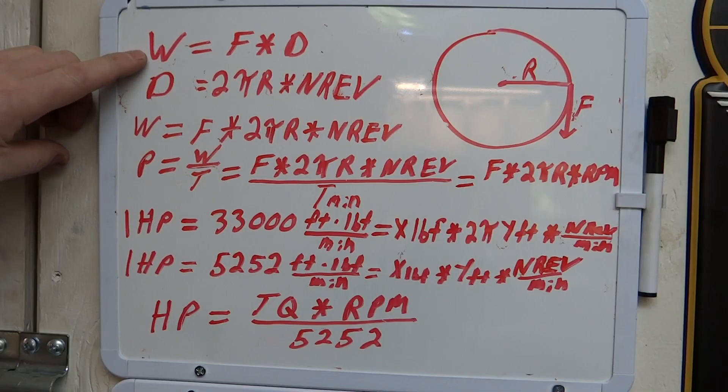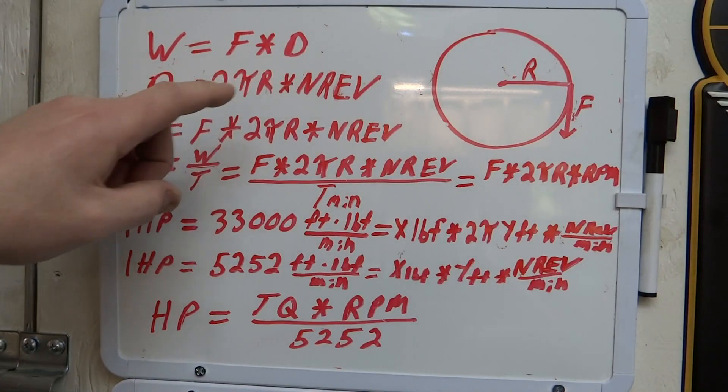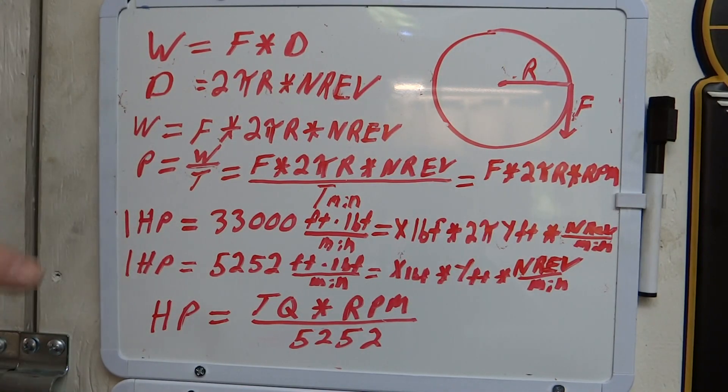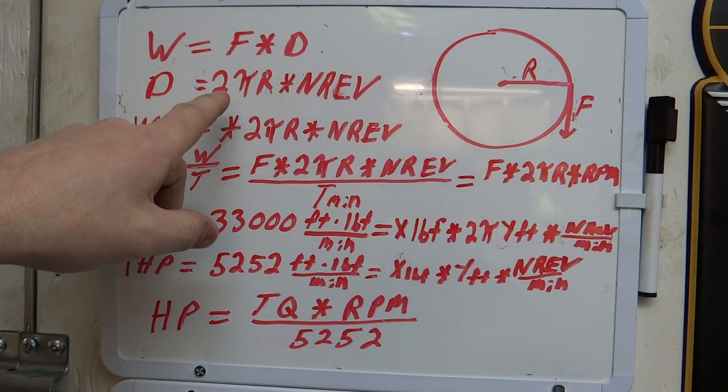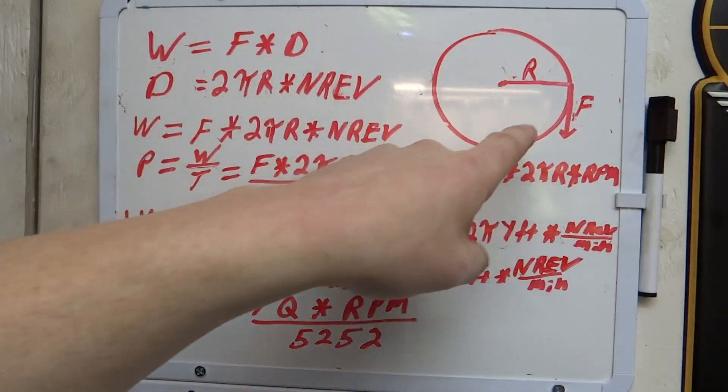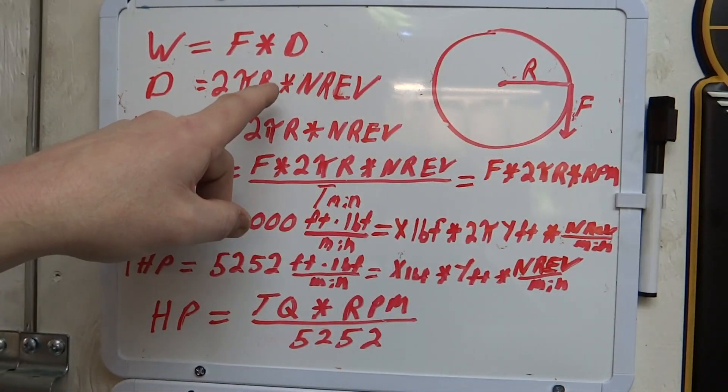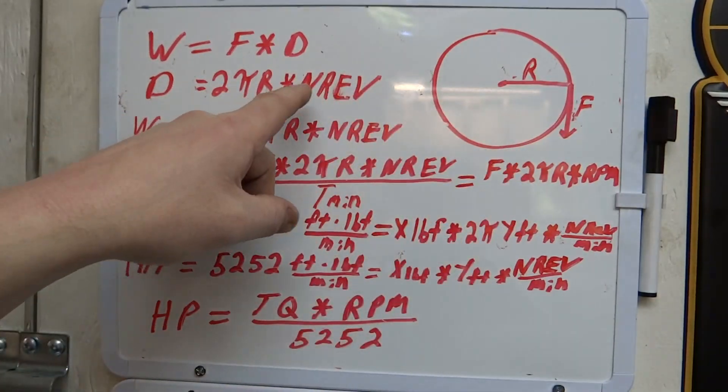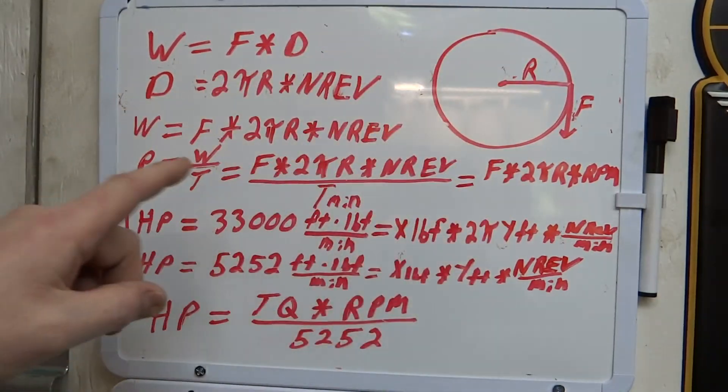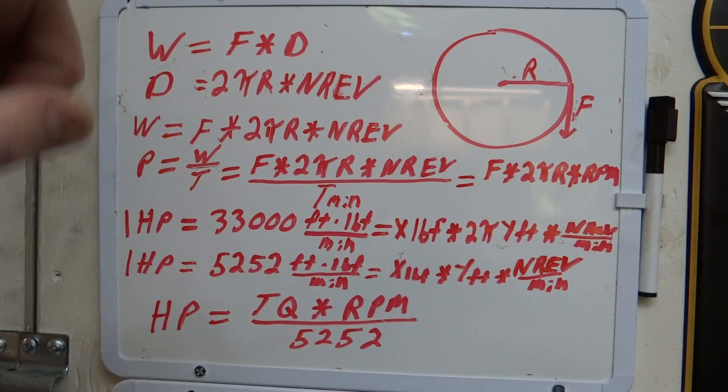So we define what work is: force times distance. But we need to put that in terms of rotational work, so we're going to define distance as 2πR, which is the circumference of a circle. The distance will also be the circumference of the circle times the number of revolutions of the force being applied around that circle.